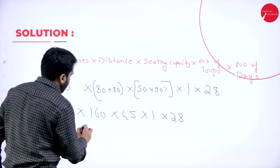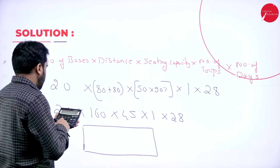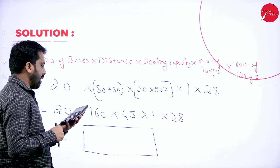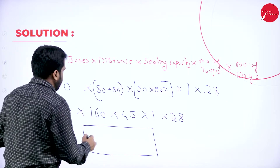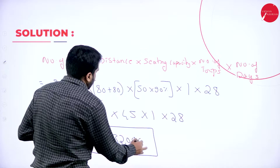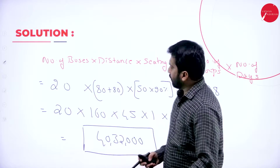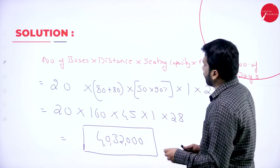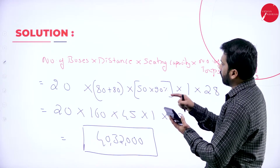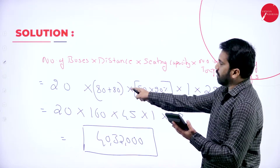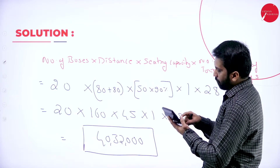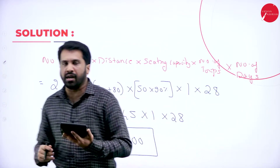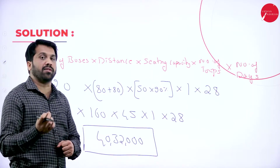Calculating: 20 × 160 × 45 × 1 × 28. Number of buses 20, distance 160, 90% of 50 = 45, trips 1, days 28. The total passenger kilometres comes to 40,32,000. This is a simple calculation and this is the answer for Problem 1.